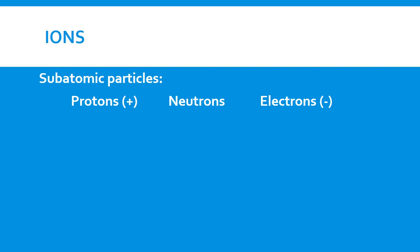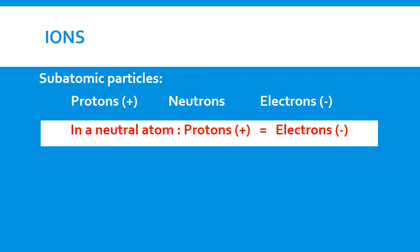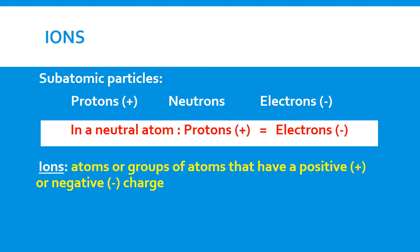So what forms an ion? In a neutral atom, the number of protons and electrons are equal. So if we have equal amounts of positive and negative charge, the overall charge is zero.